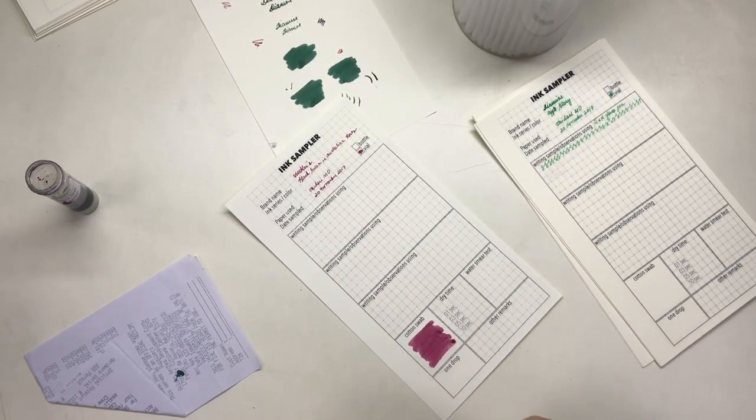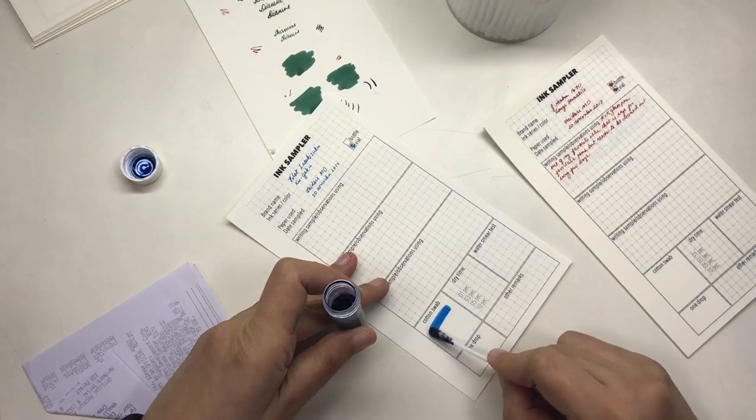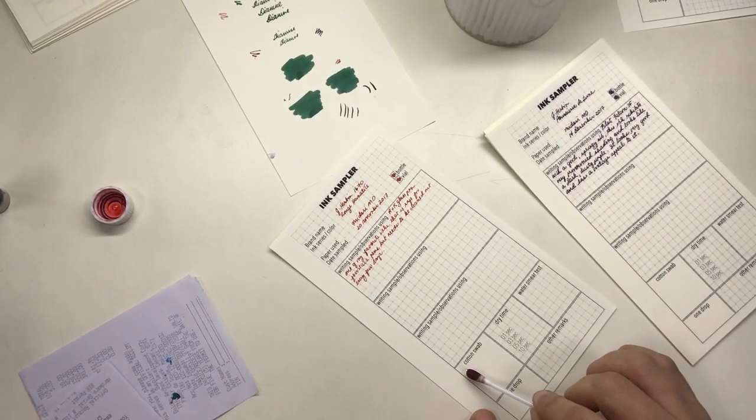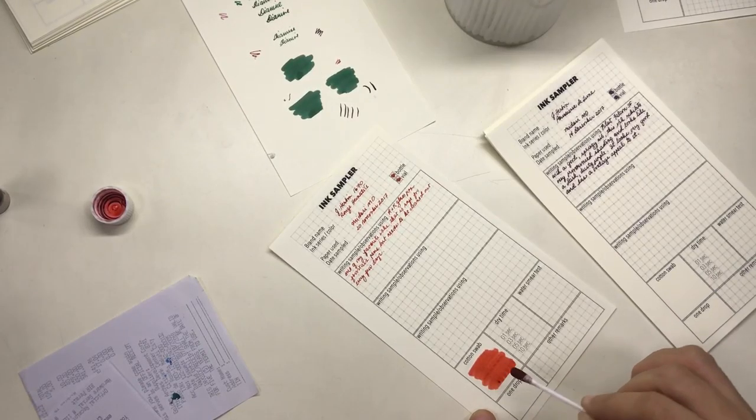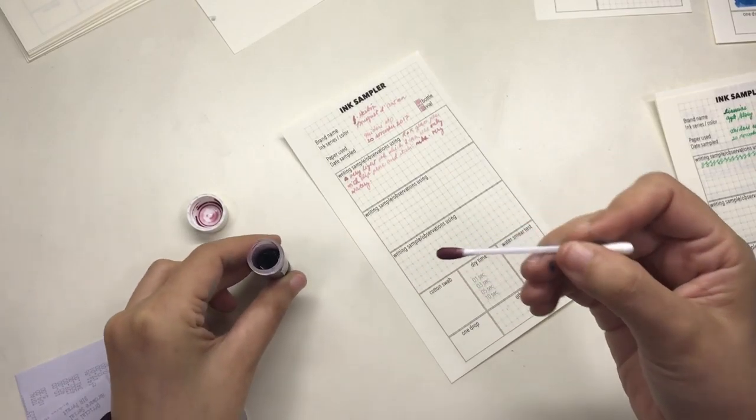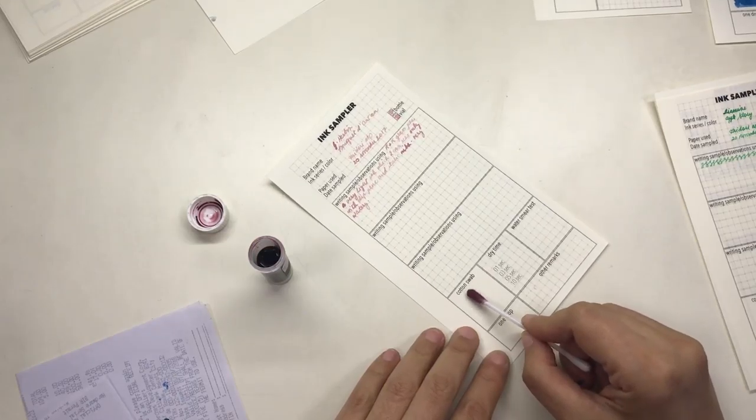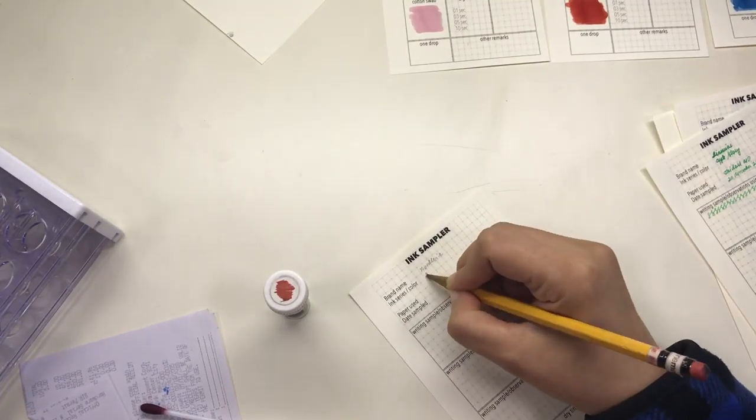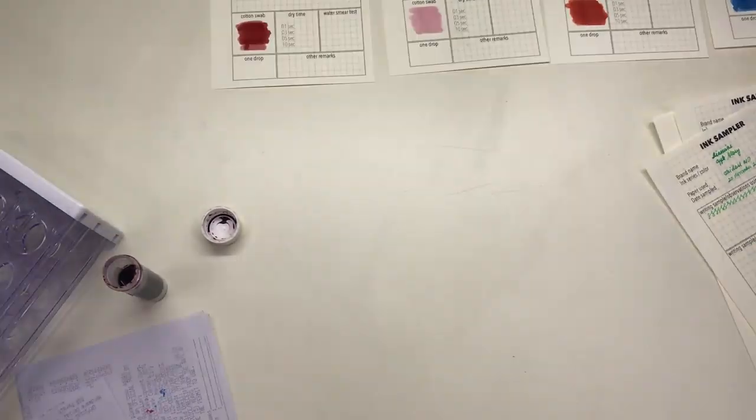At some point of the swabbing you'll see me using a pencil instead of the glass pen, but that's only because I didn't really have all the time to wait for the writing of the glass pen to dry completely before moving on to the next step. So I just used a pencil to write down the brand name, the ink color and the ink series and the date so that I can continue with the swabbing.